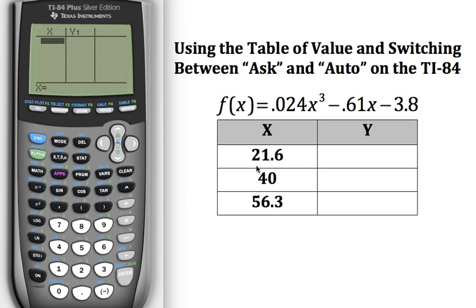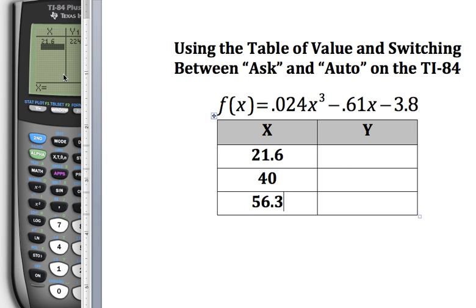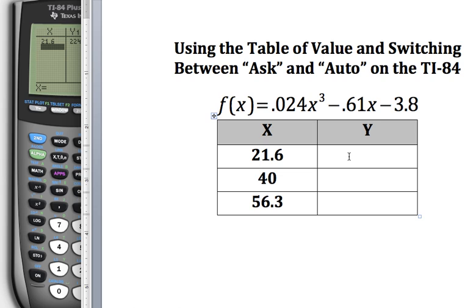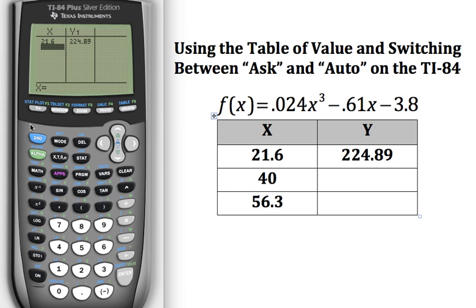Alright, so 21.6. So I can just enter 21.6 and then hit enter. And then when I do that, it generated the y value for me. So then I can come over here and let's go look at that again. 224.89. So 224.89. Okay, so way better than having to do this by hand.